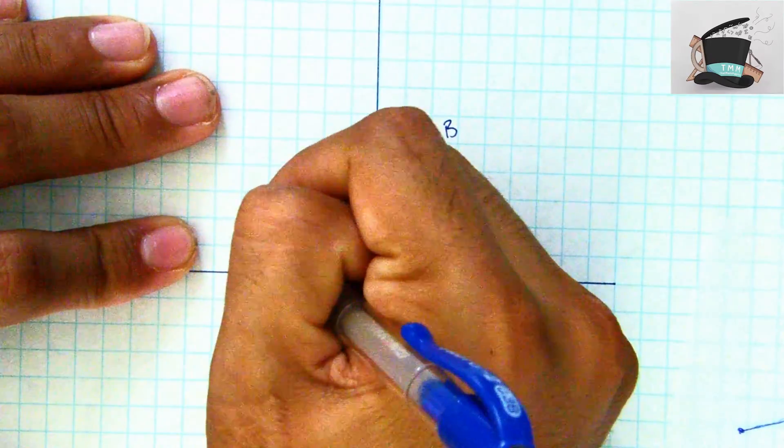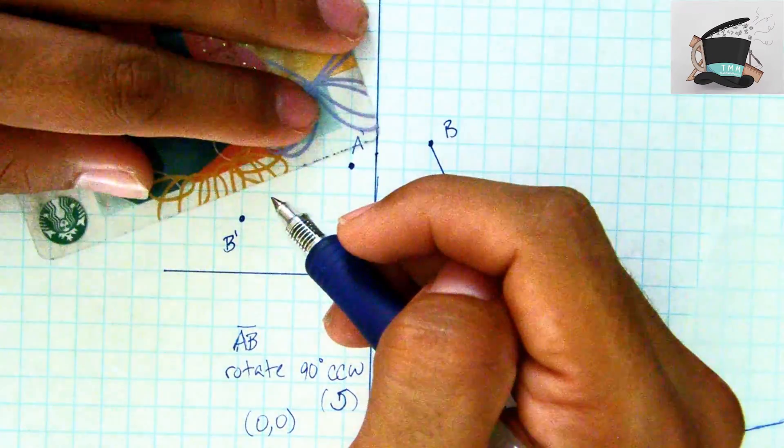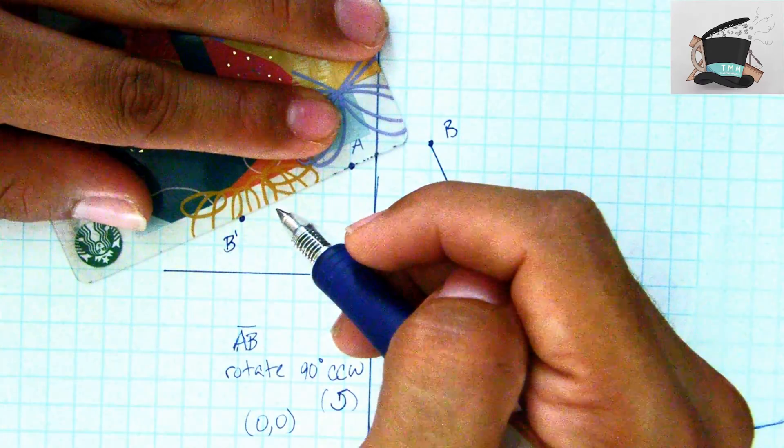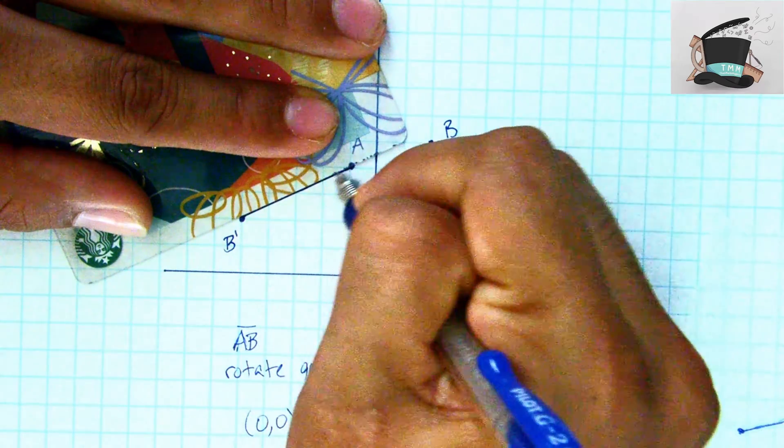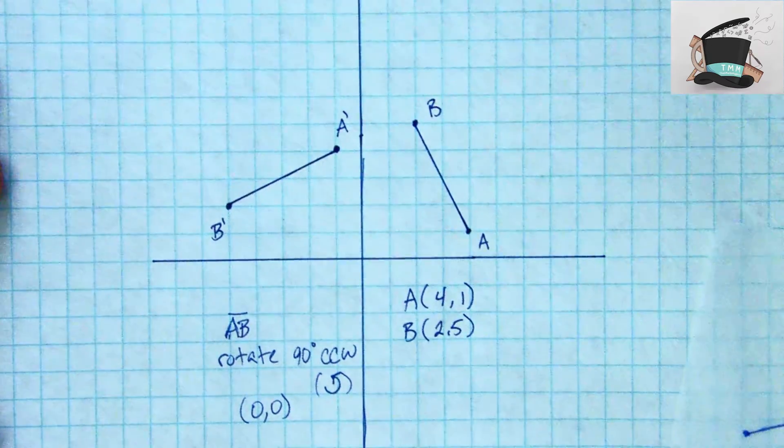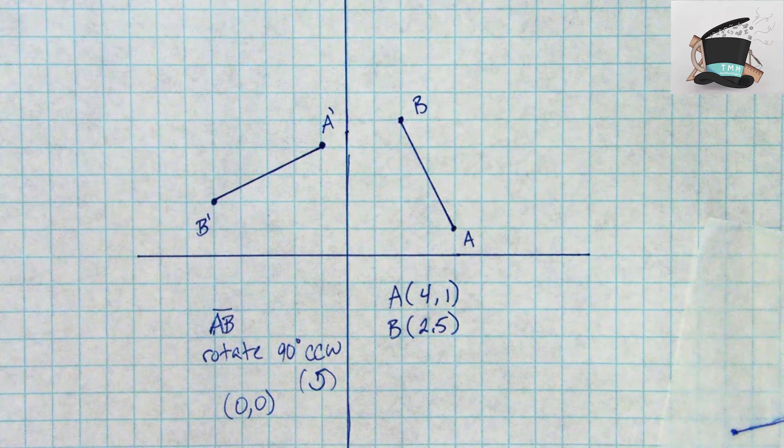Again get your straight edge and you want to go ahead and connect those two points. And now we see that we have our line segment AB and it's been rotated 90 degrees counterclockwise and now we have our new line segment A prime B prime.